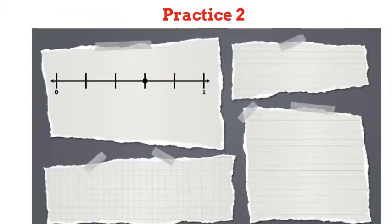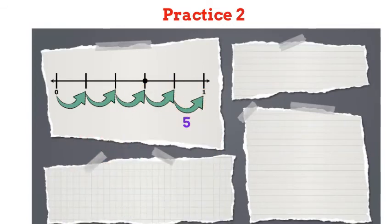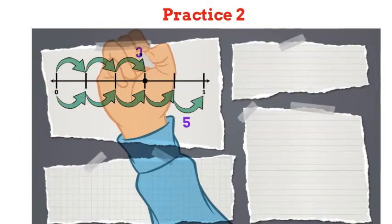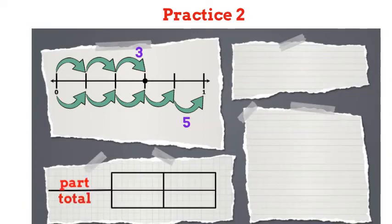Let's do another practice problem together, then you'll be ready to work some problems on your own. Look at this number line model. What value is represented by the dot? First, let's count the total number of sections between 0 and 1. There are 5. Next, let's count the sections from 0 up to the dot. There are 3.